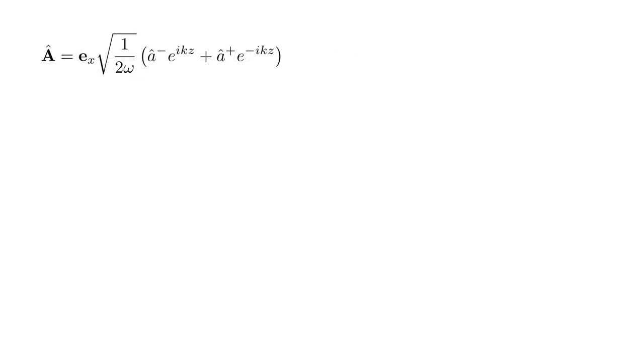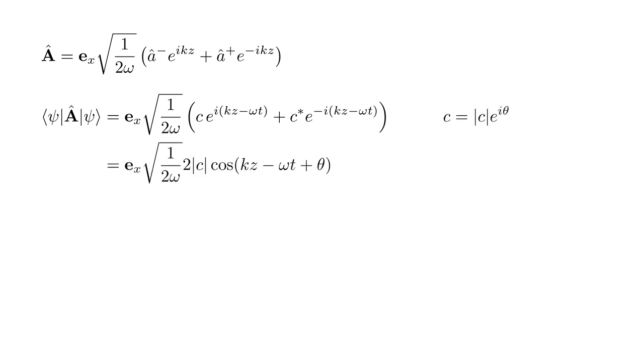Therefore, our electromagnetic field operator has an expectation value polarized in the x-direction, times square root one over 2ω, times the quantity c e to the i(kz - ω t), plus the complex conjugate. Writing the complex number c as magnitude c times e to the iθ, and using the fact that a complex expression plus its conjugate equals twice the real part of the expression,